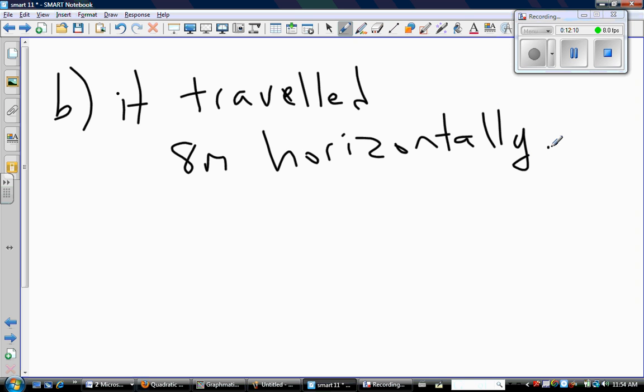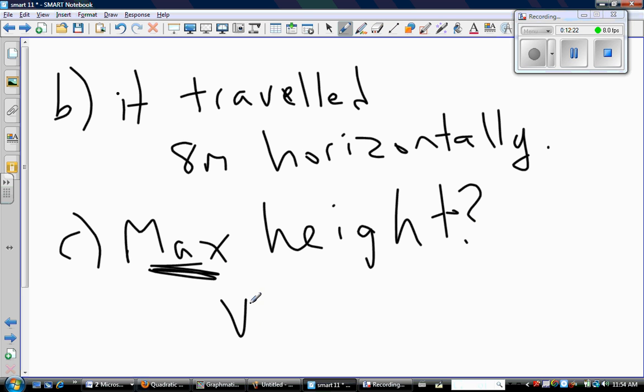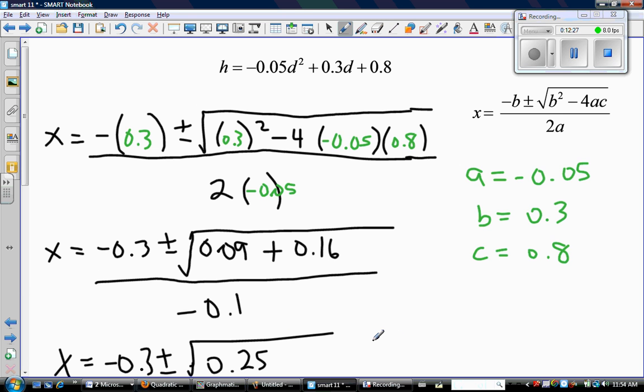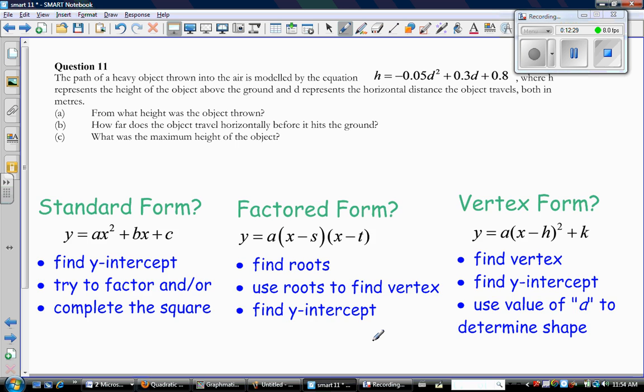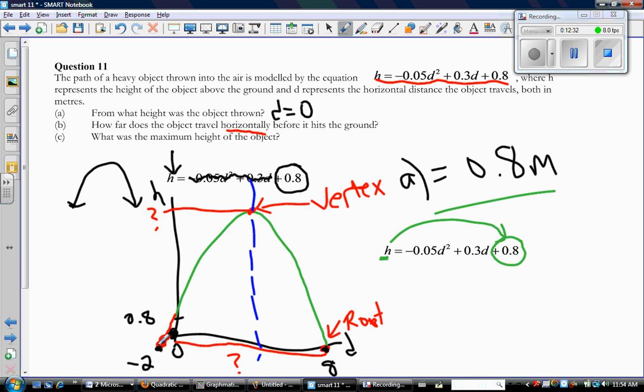So now we have to try to answer question C. And question C was we needed to find the maximum height. So we know any time the word maximum or minimum is used, it's a question about vertex. So how do you find vertex? Again, let's go back to that little sketch I made. To find the vertex, you need your roots. So you take your roots, you find their midpoint, and that midpoint represents the axis of symmetry. And your vertex is always on your axis of symmetry. So let's go do that math.